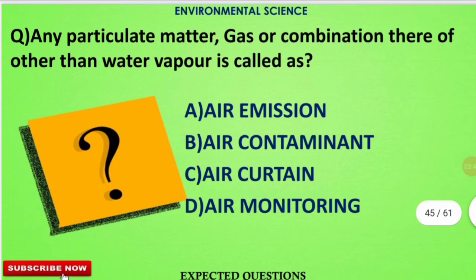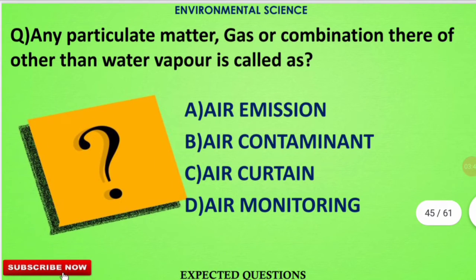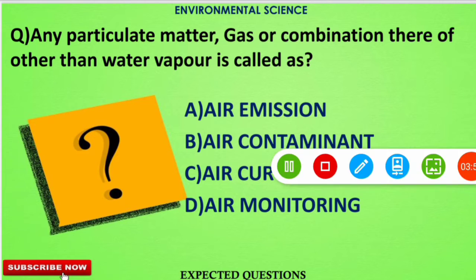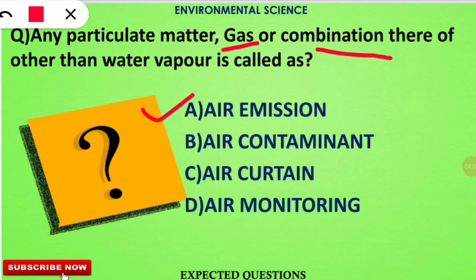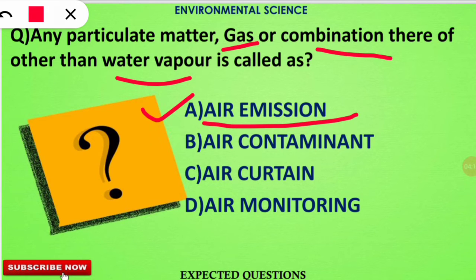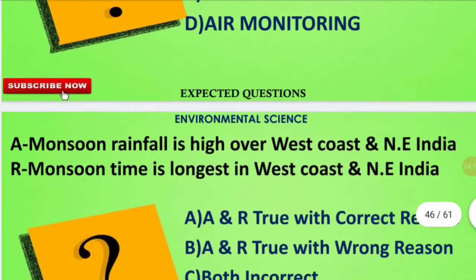The next question is: any particular matter, gas, or combination thereof other than water vapor is called as what? The correct option is option number A — a gaseous material combination other than water vapor is called air emission.